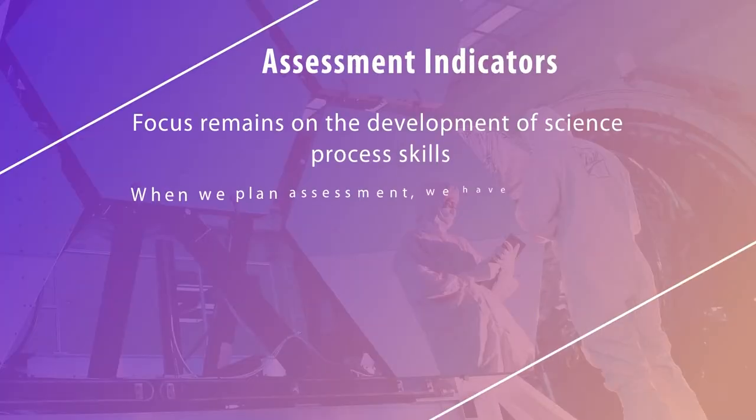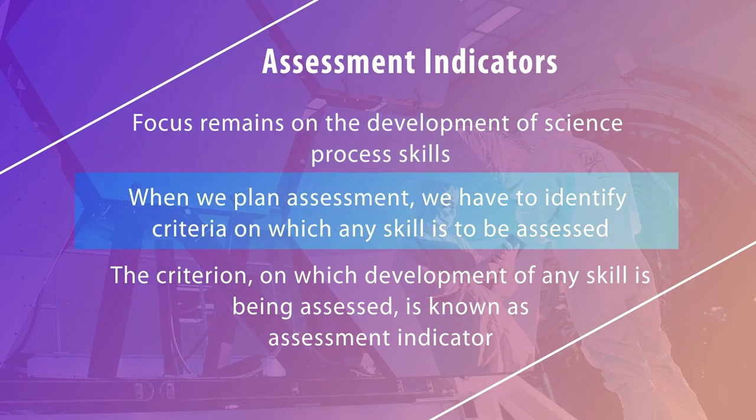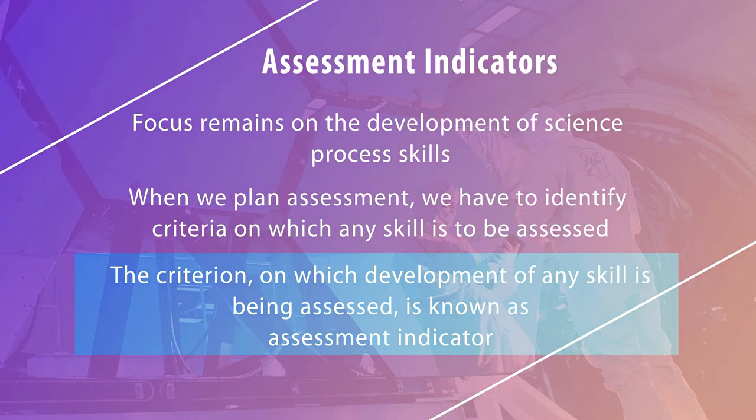If you want to assess your learners in your science classroom not only for their knowledge about a particular content, but also about the processes involved in scientific inquiry, then you need to facilitate the development of process skills and also assess how these process skills have been developed among the learners. This whole assessment has certain criteria, and these criteria are called assessment indicators. Assessment indicators are the criteria which focus on development of science process skills. When we plan assessment, we identify the criteria on which any skill is to be assessed, and that is known as an assessment indicator.